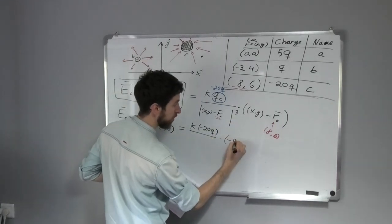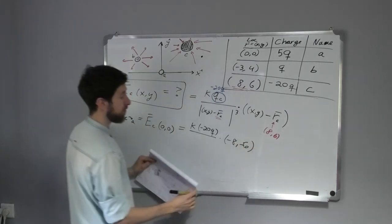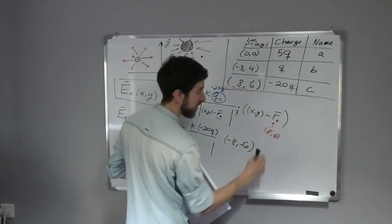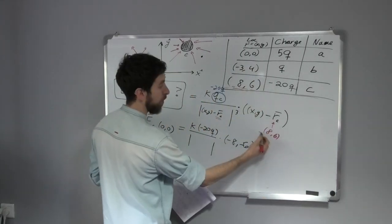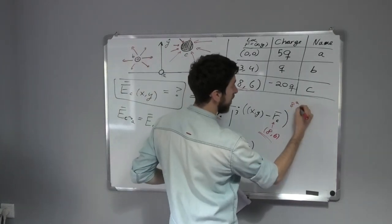...minus six. And here it's the magnitude, so we need to calculate what is the magnitude of this term. And the magnitude of this term is eight squared plus six squared. Put it here, and this equals 10.